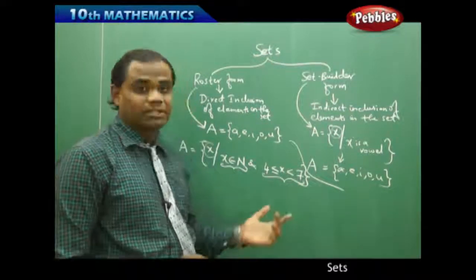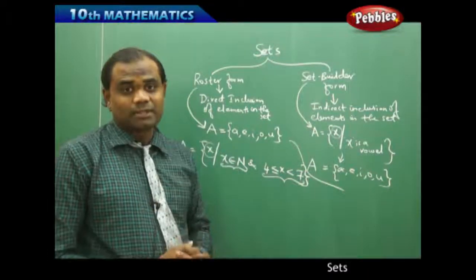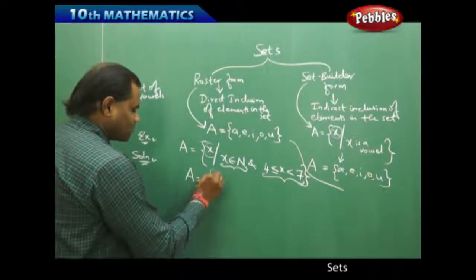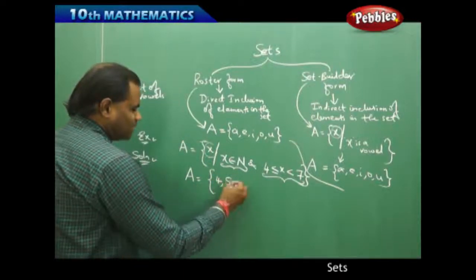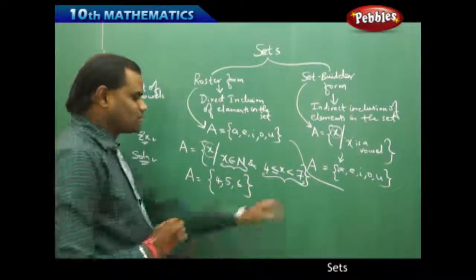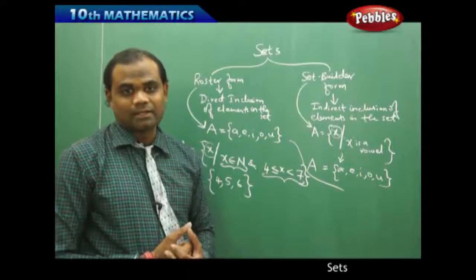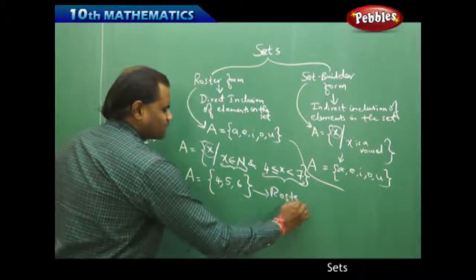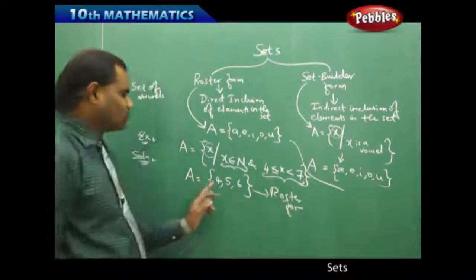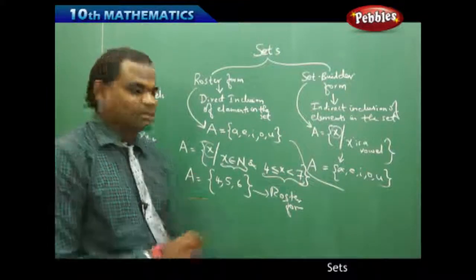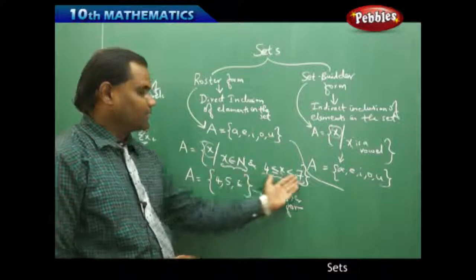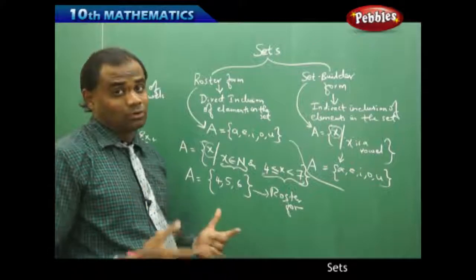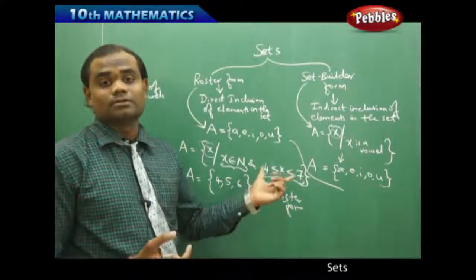Once this information is grasped, it becomes easy. The natural numbers between 4 and 7, inclusive of 4, are 4, 5, 6 — but excluding 7, so 7 is not in the set. Therefore the set builder form, when converted to roster form, gives the set {4, 5, 6}. We should be able to convert the set builder form to the roster form, or sometimes the roster form into the set builder form.